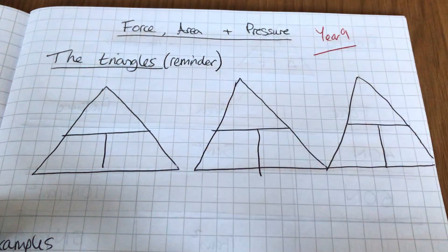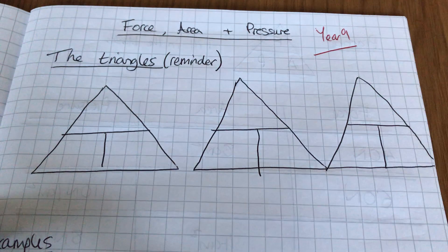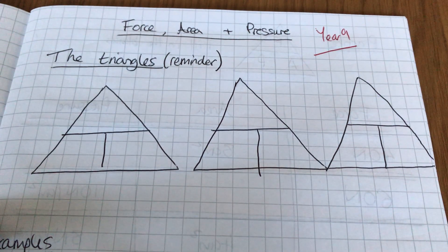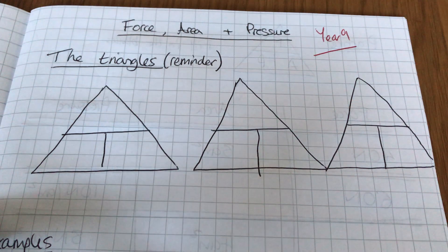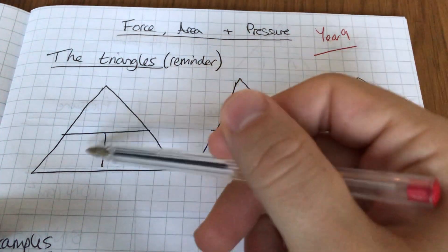Hello and welcome back to year nine. We're looking now today at the third and final of the triangles that you need to learn for maths. There are a lot more for science, so you have to speak to a science teacher about that, but for maths the only three you have to learn.